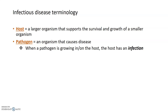In terms of infectious disease terminology, the first term is host — a larger organism that supports the survival and growth of a smaller organism. Bacterial pathogens also have hosts. A pathogen is anything that can cause disease — it can be a bacteria, a virus, or in some cases acellular particles called viroids and prions. When a pathogen is growing within or on a host, the host is said to have an infection. The signs, symptoms, and characteristic hallmarks of damage caused to the host are what is known as an infectious disease.